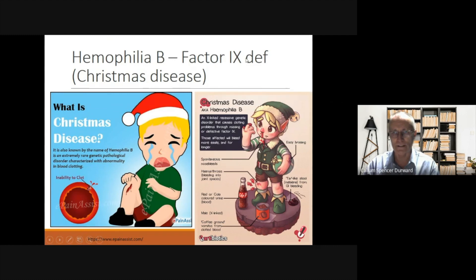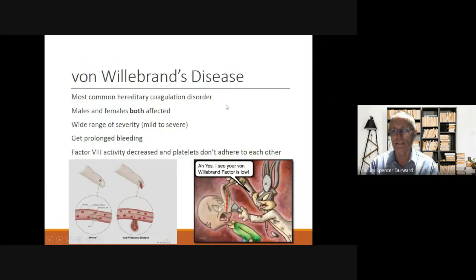Haemophilia B, or factor IX deficiency, is also called Christmas disease. They bleed in a similar way to haemophilia A patients; however, their condition may in many cases be less severe. Von Willebrand's disease is the most common hereditary coagulation disorder. Both males and females are affected and there's a wide range of severity from mild to severe. We get prolonged bleeding in these patients. Factor VIII activity is decreased and platelets don't adhere to each other.